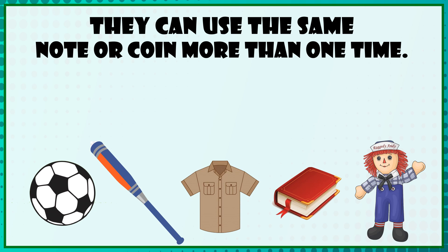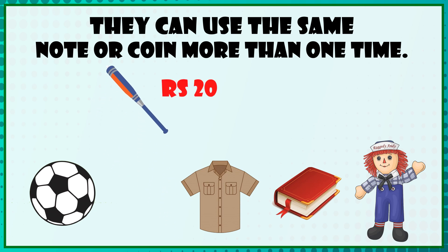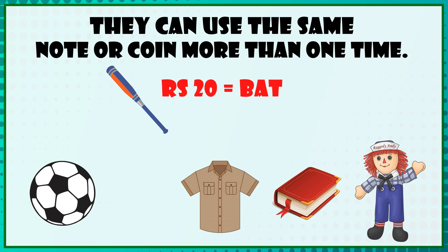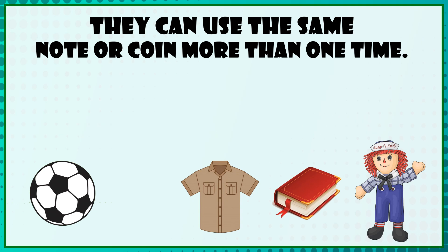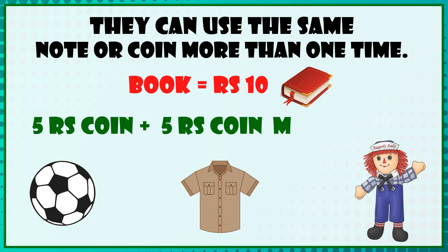So let's do it. Rupees 20 for the bat — rupees 10 plus one more rupees 10 makes rupees 20. The book costs rupees 10 — a 5 rupee coin plus a 5 rupee coin makes rupees 10.